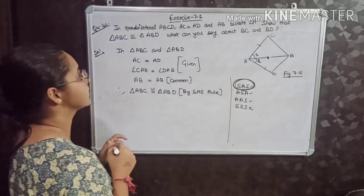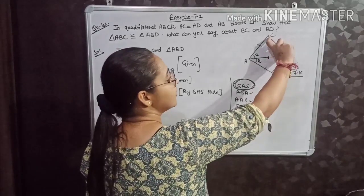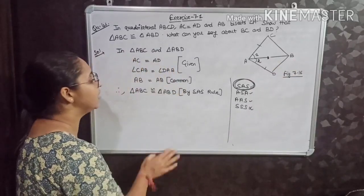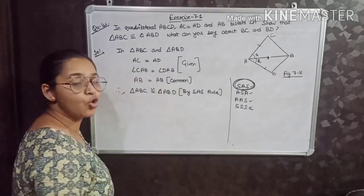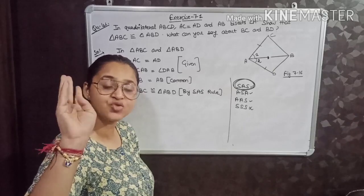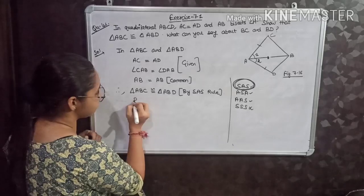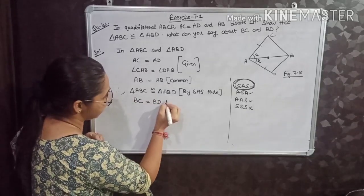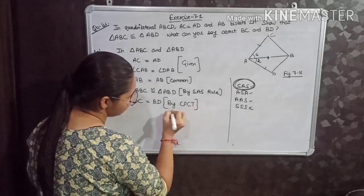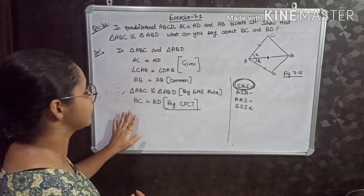The next part asks: what can you say about BC and BD? BC is the third side of triangle ABC and BD is the third side of triangle ABD. If two triangles are congruent, then all six corresponding parts — three angles and three sides — are equal. So BC is equal to BD, and the reason is CPCT: corresponding parts of congruent triangles are equal.